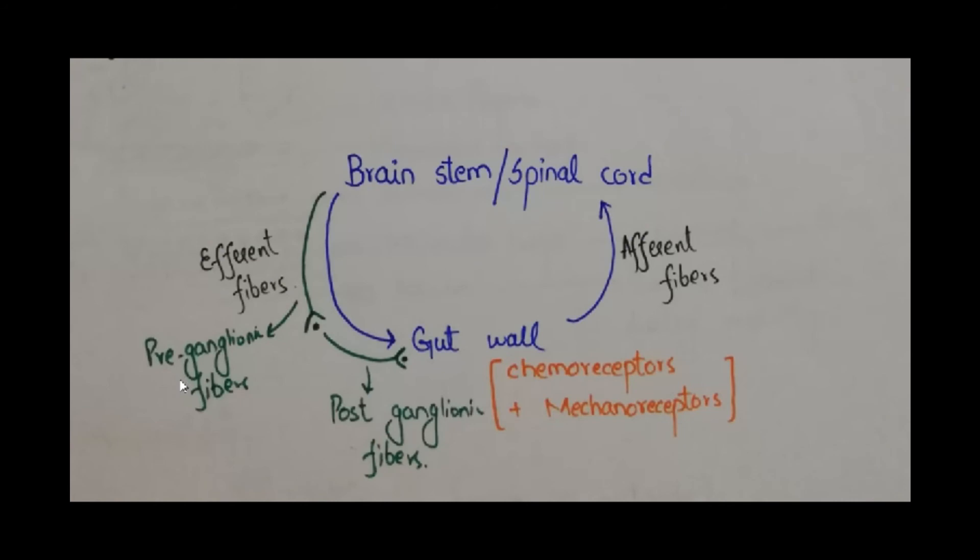The preganglionic fibers have their cell bodies present within the brainstem and they send their axons down and synapse with the dendrites of the postganglionic fibers. The information travels to the cell body and then through the axons of the postganglionic fibers, that information is conveyed to the gut and as a result either secretion, motility or any other specific function of the gastrointestinal tract is accomplished.